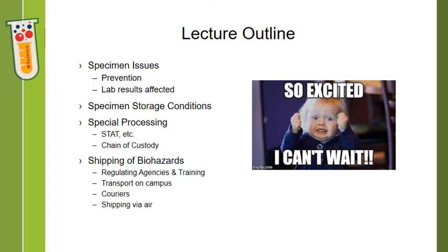Here's our lecture outline for today. We are going to talk about common specimen issues, how to prevent them, and which lab results might be affected. We will discuss the different storage conditions for specimens, and then special processing that might be required, like stat specimens or those that require chain of custody documentation. Finally, we will talk about shipping and transporting biohazards, which includes most laboratory specimens.